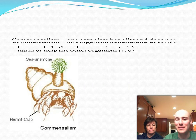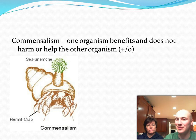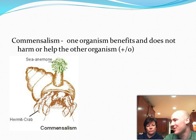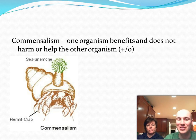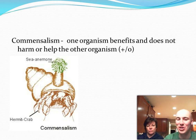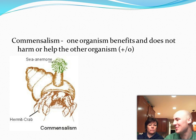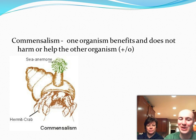The final one is called commensalism — that is when one organism benefits and the other really isn't harmed or helped. Here's a hermit crab with a sea anemone riding on its shell. The sea anemone benefits because it gets to move now — it's got a free ride. And the hermit crab, it doesn't really affect it either way.